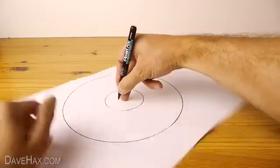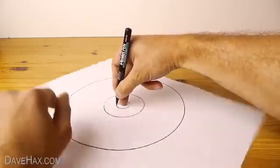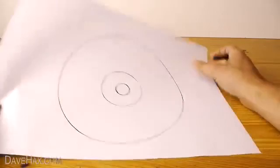And to do a smaller one we'll pivot around our finger. Not too bad for freehand circles, hey.